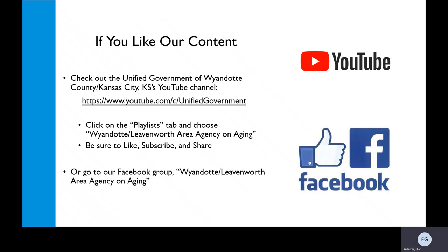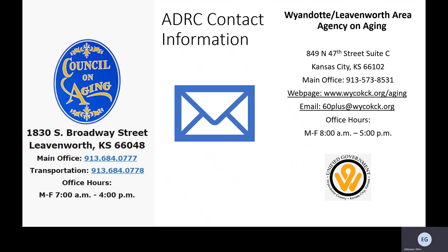Or join us on our Facebook group, Wyandotte Leavenworth Area Agency on Aging. Their office is located at 1830 South Broadway Street in Leavenworth, Kansas. Their main office phone number is 913-684-0777, and their office hours are Monday through Friday, 7 a.m. to 4 p.m.